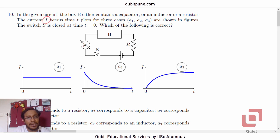The current I versus time T plots for three cases A1, A2 and A3 are shown in the figures. The switch S is closed at time T equal to 0. Which of the following is correct?